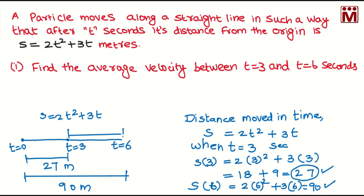From 3 to 6 seconds, we find the average velocity. The formula for average velocity is distance by time taken. From 0 to 6 seconds the distance is 90 meters, from 0 to 3 seconds it is 27 meters. So 90 minus 27 gives the distance covered from 3 to 6 seconds.